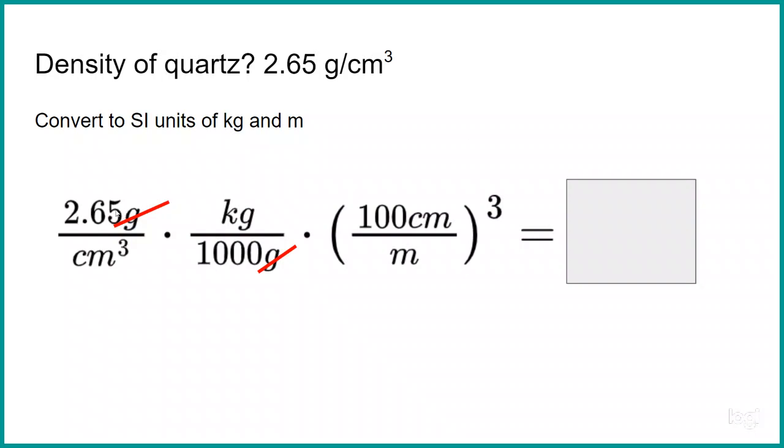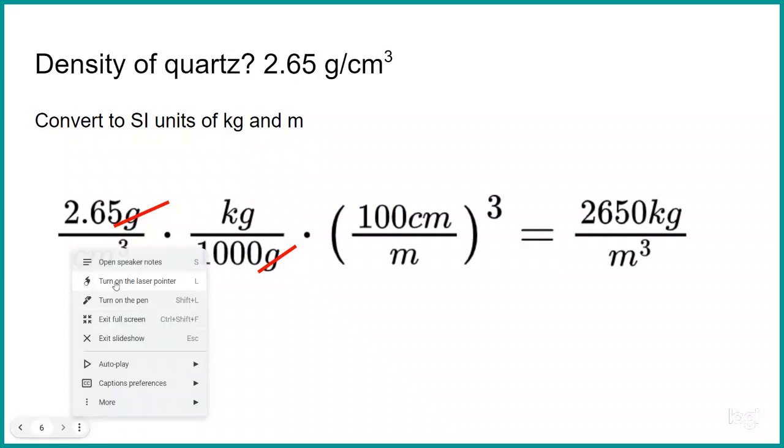Okay. So 2.65 grams per cubic centimeter. And we're going to multiply that by one kilogram over 1,000 grams. And we're going to multiply that by 100 centimeters per meter, and we're cubing that whole quantity. So it's going to be 100 times 100 times 100. So I put in my calculator 2.65 divided by 1,000 times 100 times 100 times 100. And I come up with 2,650 kilograms per cubic meter. And that's going to be a number that's really useful for us when we are doing calculations this semester of stress at depth.